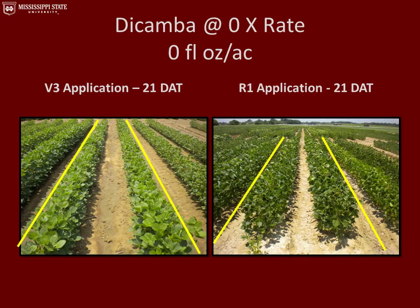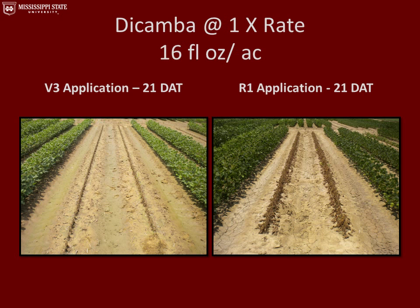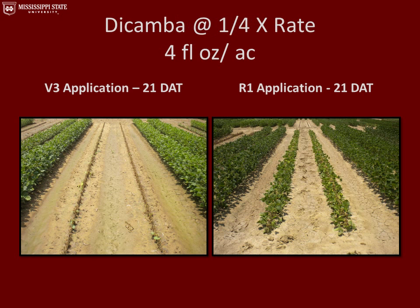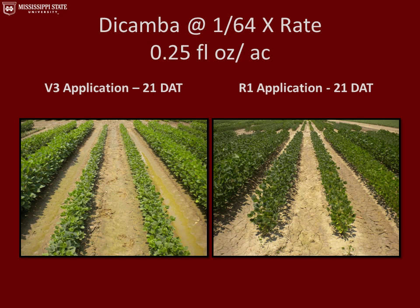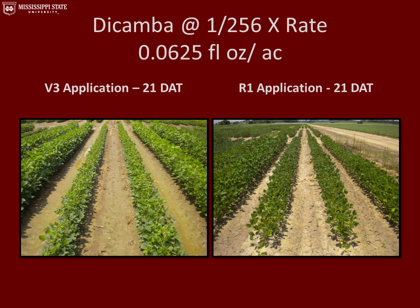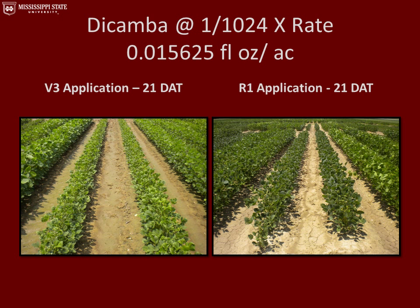This slide represents treatments that received a 0x application rate of dicamba — the untreated checks — and is used to set up the subsequent pictures. All pictures on the left-hand side are from the V3 application, and all pictures on the right-hand side are from the R1 application. Each plot was four rows and we treated only the two center rows. All pictures were taken 21 days after the applications were made. Shown are dicamba applied at the 1x, 1/25x, 1/16x, 1/64x, 1/256x, and 1/1024x rates.